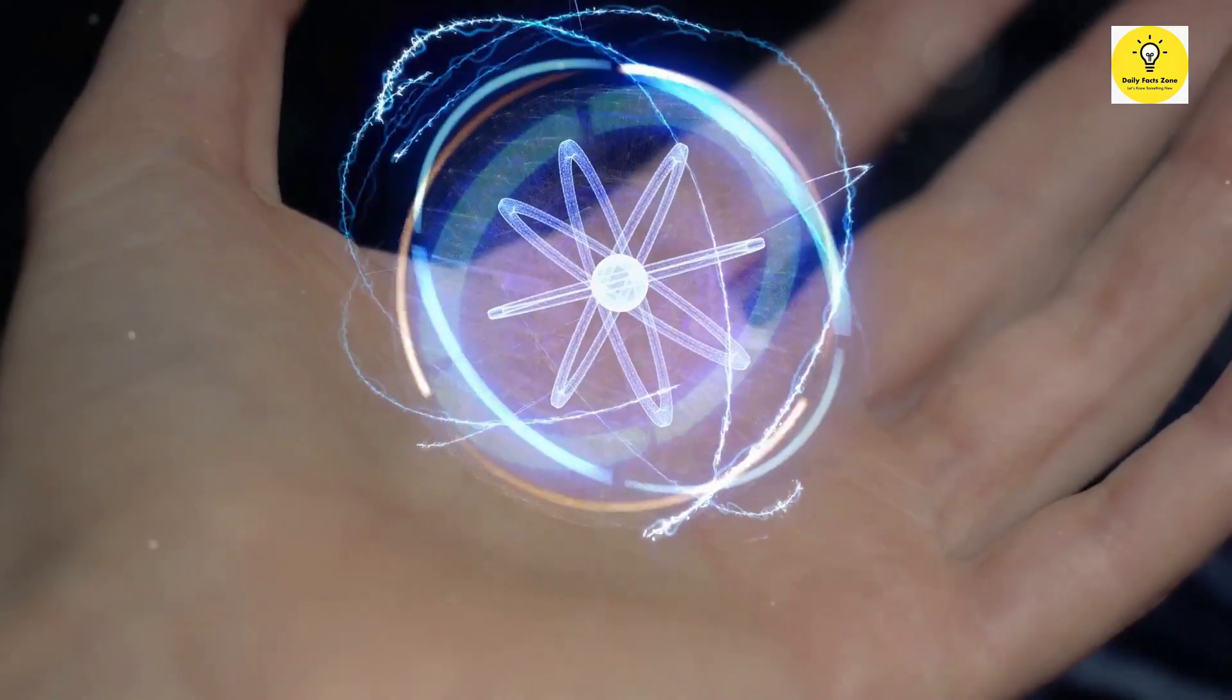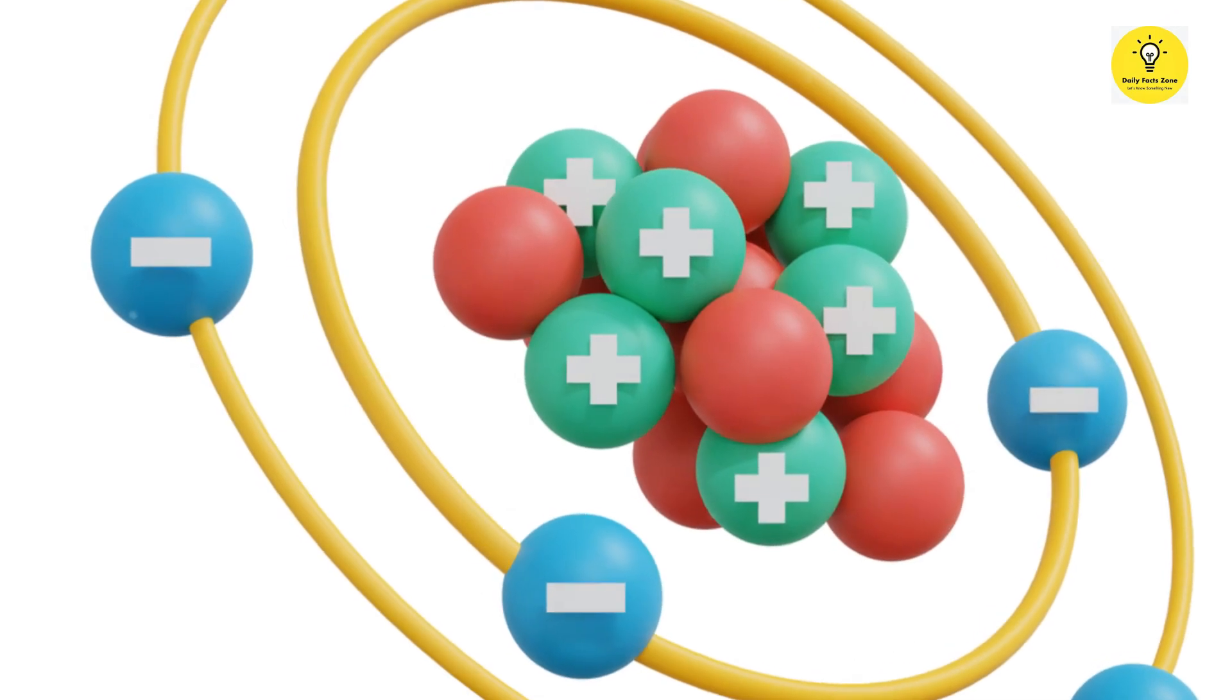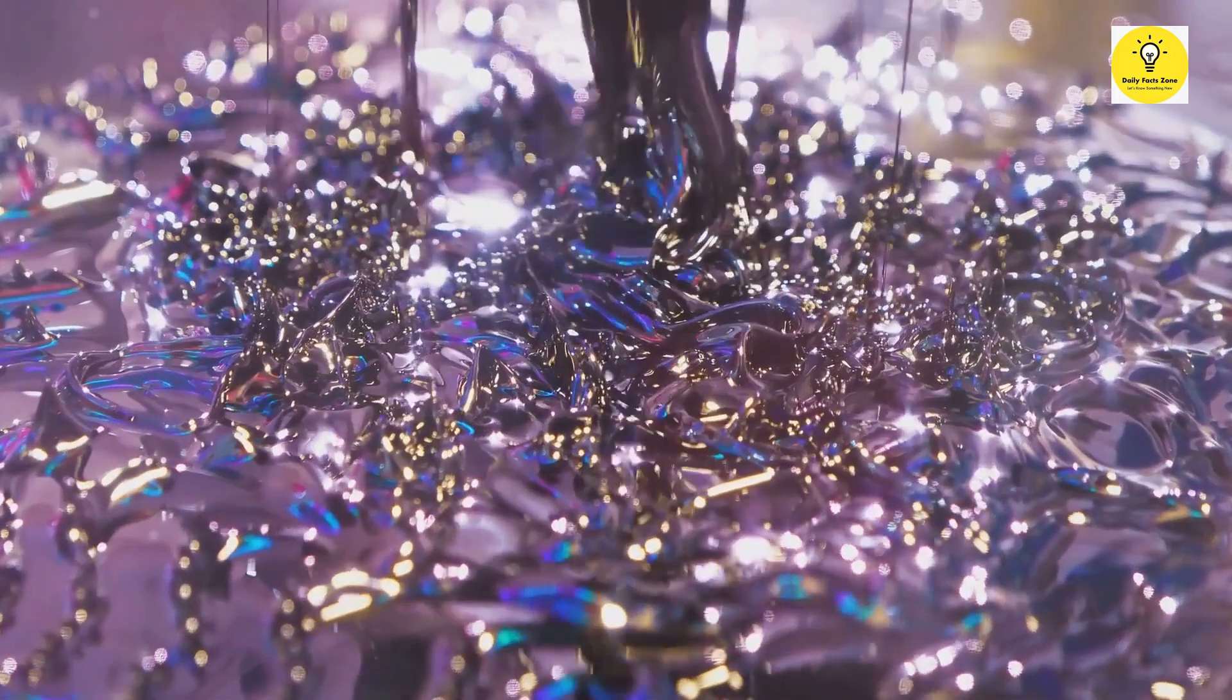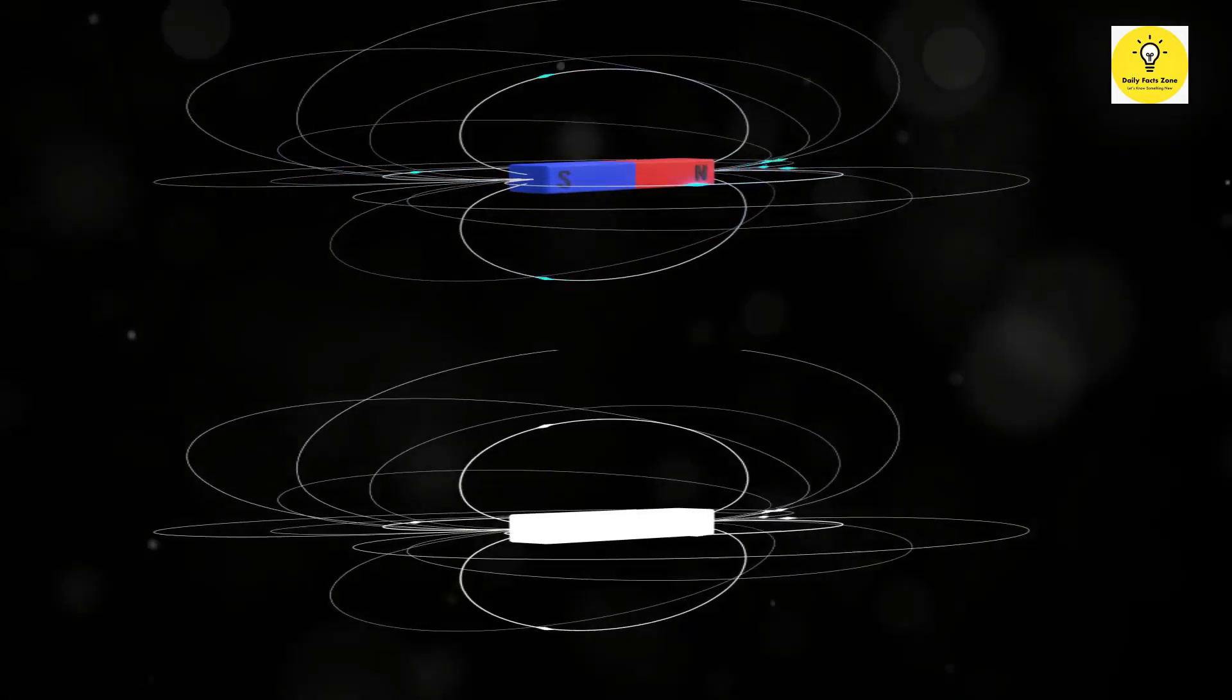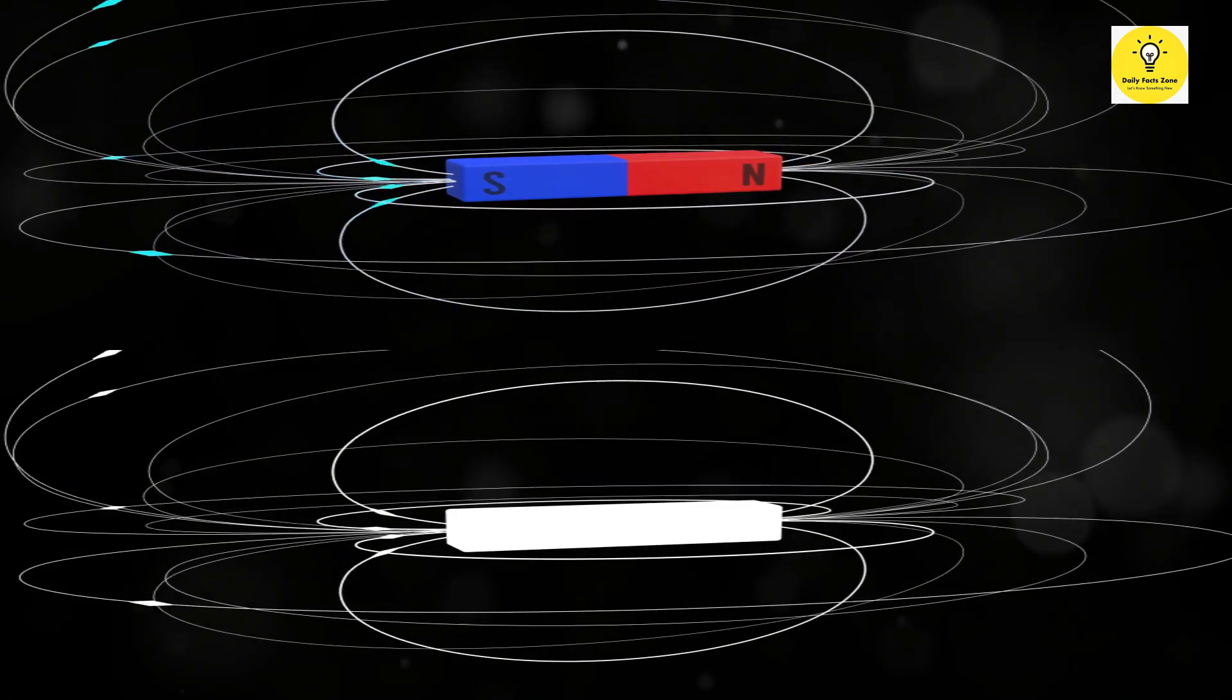The origin of magnetism lies within the atom. Electrons, the tiny particles orbiting the nucleus of an atom, possess a property called spin. This spin generates a tiny magnetic field. In most materials, the magnetic fields of individual electrons cancel each other out, resulting in no overall magnetism.